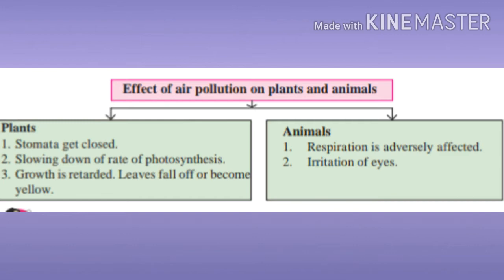Stomata get closed. Stomata means the small pores on the leaves for the exchange of gases. These stomata are responsible for exchange of gases. Due to air pollution these pores get closed, slowing down the rate of photosynthesis.